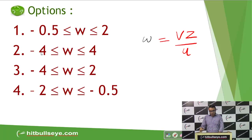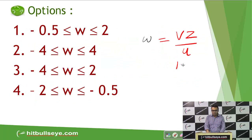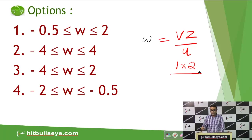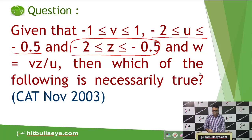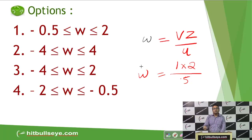Since V and Z are both in the numerator, I have to maximize their magnitudes to maximize W. The maximum magnitude of V is 1, and the maximum magnitude of Z is 2. I have to consider the minimum magnitude of U, which is 0.5, because the negative signs of Z and U cancel. So the maximum possible value for W is 1 × 2 / 0.5 = 4.